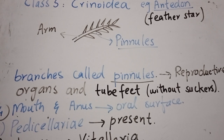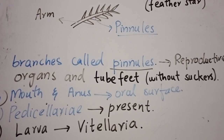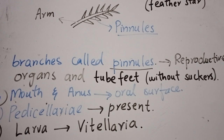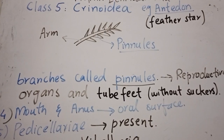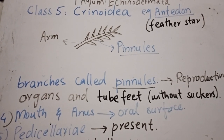Development in Crinoidea is indirect and the larva is known as vitellaria, which is a barrel-shaped non-feeding larva.